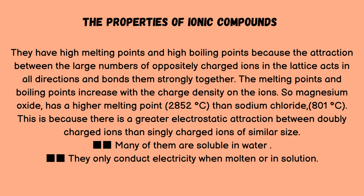Ionic compounds have high melting points and high boiling points because the attraction between the large numbers of oppositely charged ions in the lattice acts in all directions and bonds them strongly together. Melting and boiling points increase with the charge density on the ions — magnesium oxide has a higher melting point than sodium chloride because there is greater electrostatic attraction between doubly charged ions than singly charged ions. Many ionic compounds are soluble in water, and they only conduct electricity when molten or in solution.